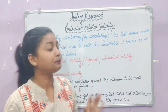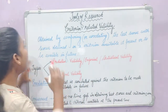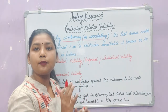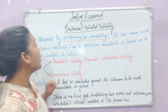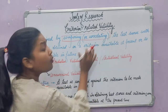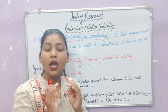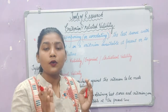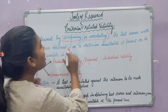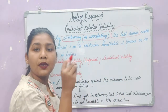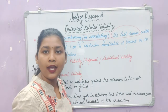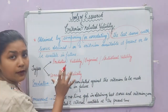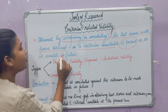What is Criterion-related Validity? As you can see, we have a point on the board. Criterion-related Validity is obtained by comparing and correlating. It means that when you have scores from your test, you will be comparing the test scores with scores obtained on a criterion available at present or available in the future.